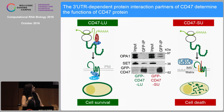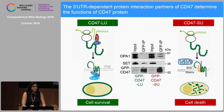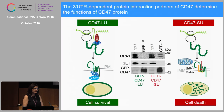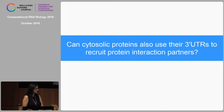In summary, CD47 can lead to cell survival but also to cell death, and it's the 3' UTR-dependent protein interaction partners that are responsible. CD47-LU interacts with SET, leading to plasma membrane localization where it acts as a don't-eat-me signal. CD47-SU does not interact with SET; instead it interacts with OPA1 and others, leading to cell death. So then we wondered: can only UTRs of membrane proteins recruit protein interaction partners, or can cytosolic and nuclear proteins also do this?